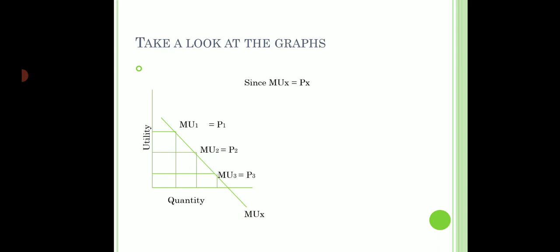So on the Y-axis, instead of utility, we can put price as well. And instead of the MUX curve, we can write it as a demand curve. Because remember, at equilibrium, marginal utility is equal to the price of the commodity. And the demand curve is nothing but the locus of the consumer equilibrium points itself.